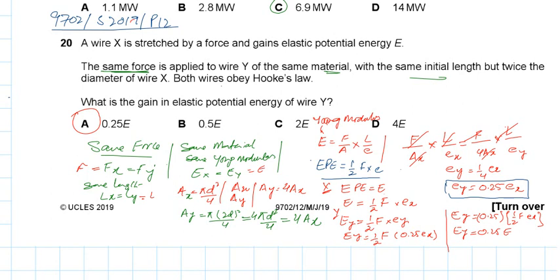Now, they say wire Y has twice the diameter of X. As you know, the area in terms of diameter is π/4 D². So if I consider the cross-section area of wire X is πD² upon 4, right, πD² upon 4.